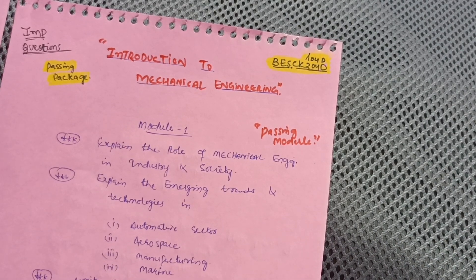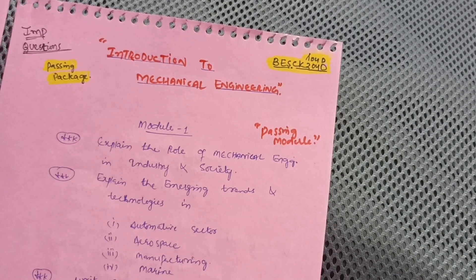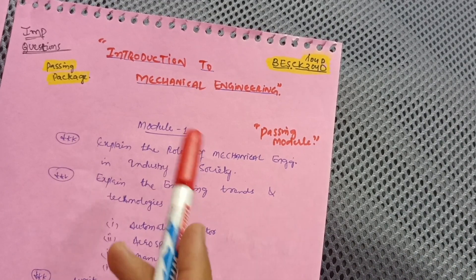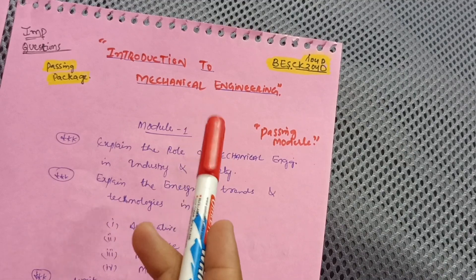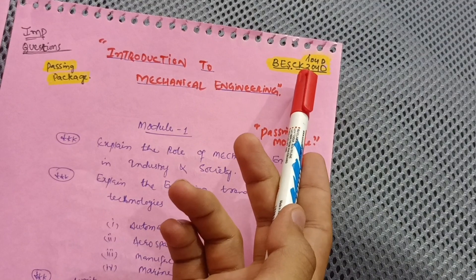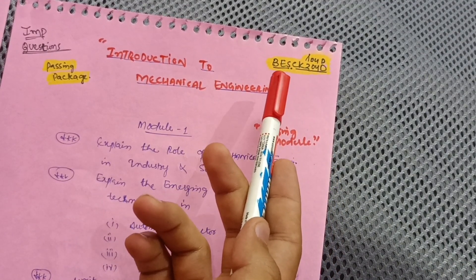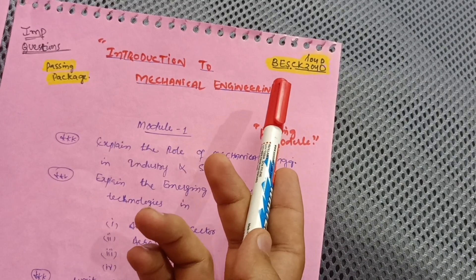Hello everyone, welcome back to my channel. Today I am with another important questions video, a passing package video for Introduction to Mechanical Engineering, which is a very simple subject to pass. Its subject code is BESCK204D or 104D if you have a backlog.